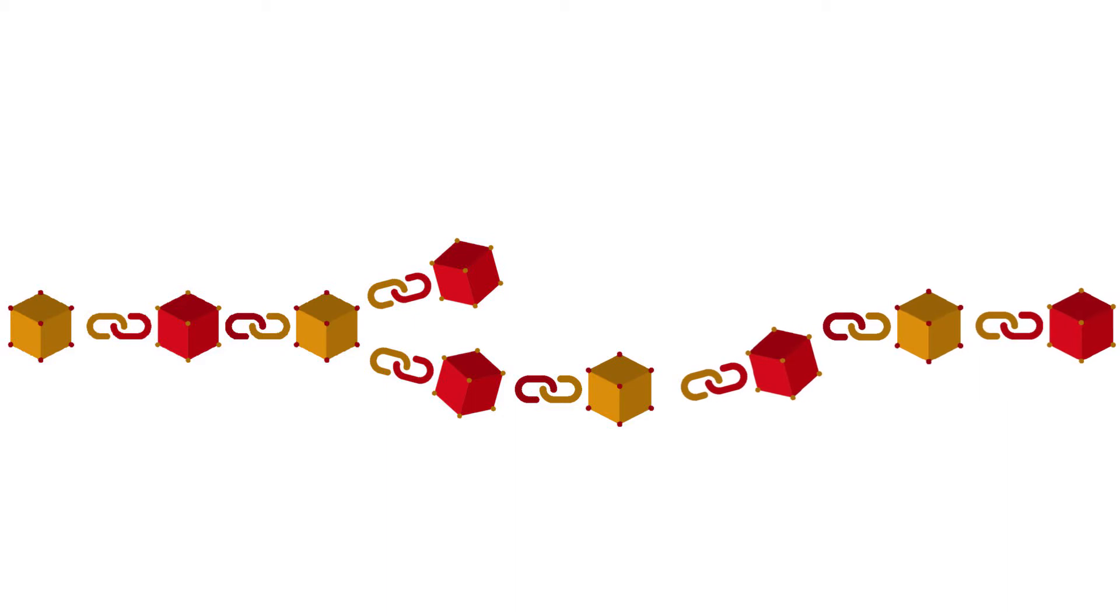If two blocks are created simultaneously the network will choose the chain with the most work in it. This means that for a moment in time there will be two chains, but as soon as the next block is mined the chain that it is attached to will become the valid chain. Any transactions that were made on the now false chain will be pulled into the next block.